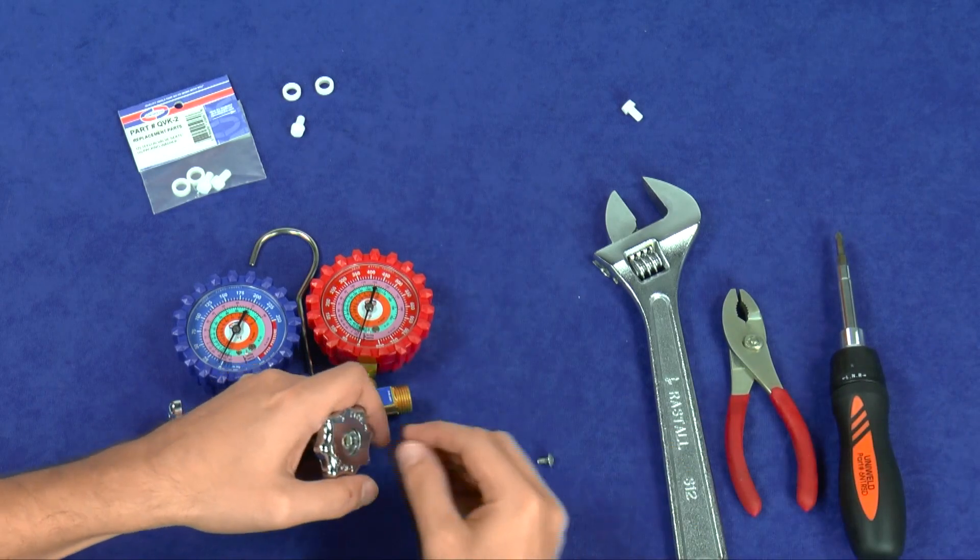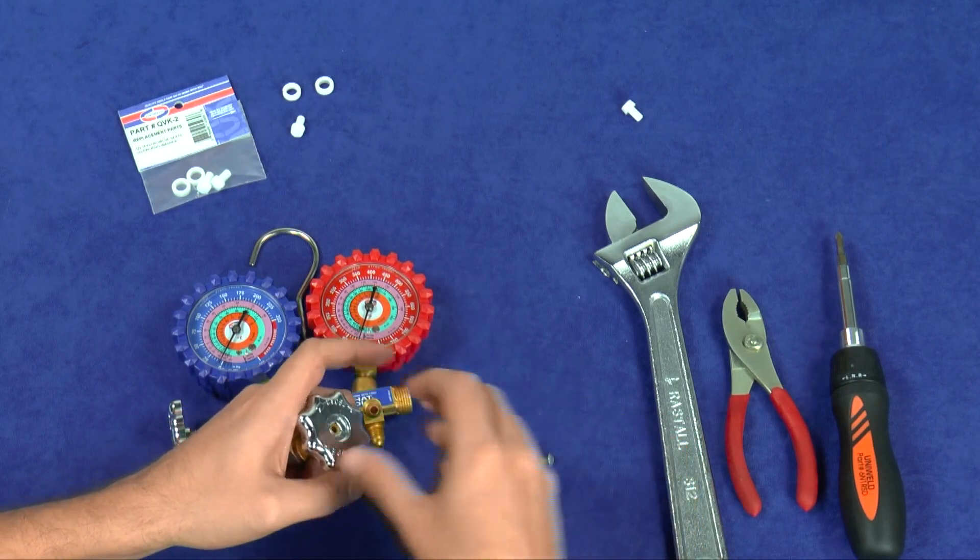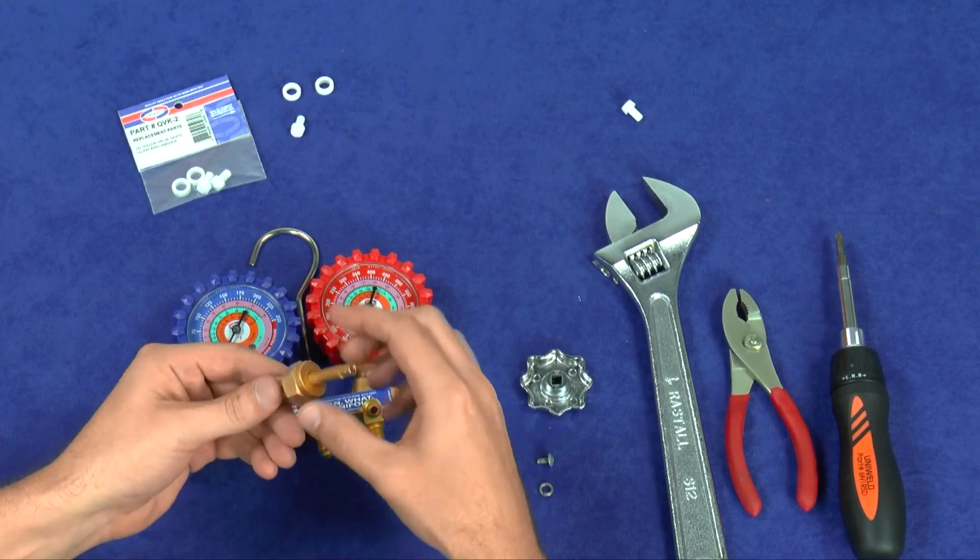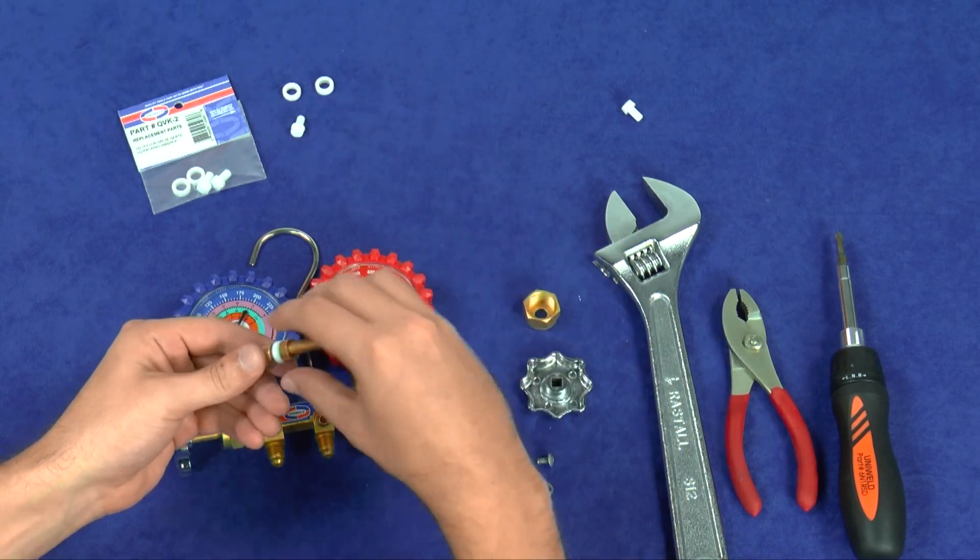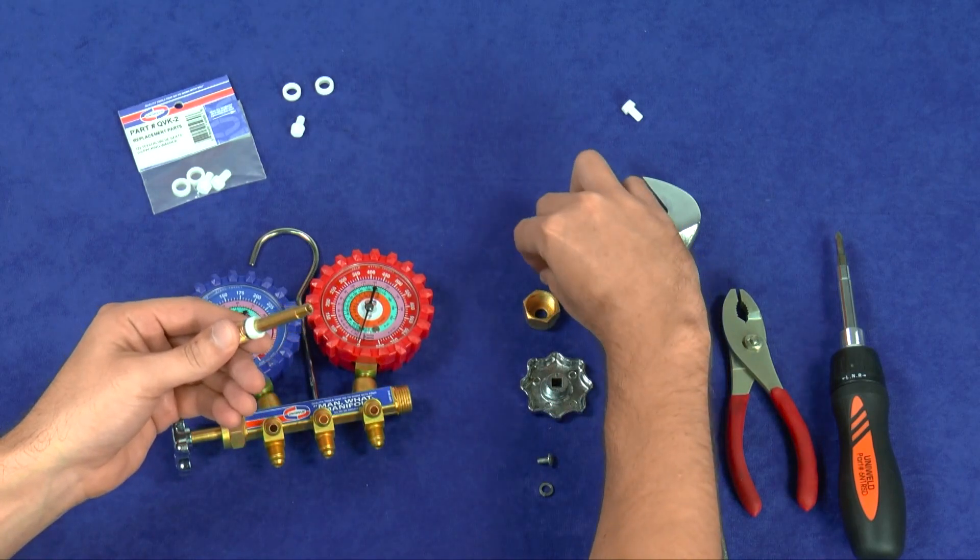Remove the screw at the end of the valve stem and remove the metal hand wheel, packing nut, brass packing washer, and the old Teflon washer.